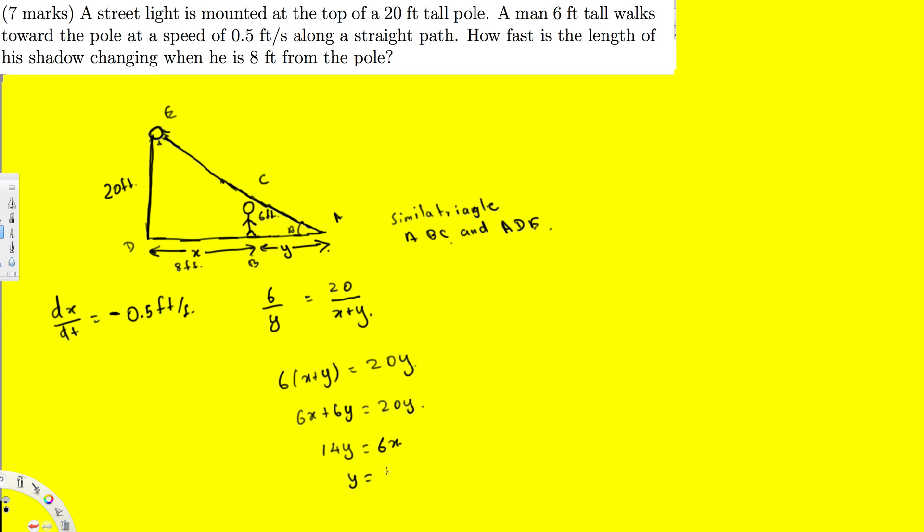Therefore, y is going to be equal to six x over 14. And if I simplify this one, this one will become three x over seven. So the question is asking dy by dt because how fast is the length of the shadow changing. So changing speed is going to be this dy by dt. And we know the distance of the shadow is y. That's why. And that's what we have to find. Now we have to find the equation with y. That's y is equal to three x over seven.